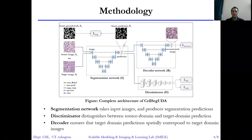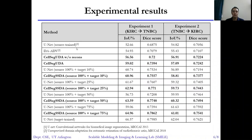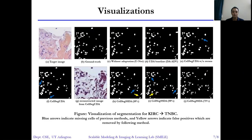Here is the complete architecture, in which there are three modules. In our experiment, we use two public datasets. And from this table, you can see that our method outperforms two baselines and it becomes very close to the upper bound.